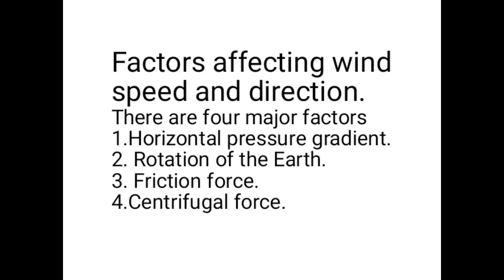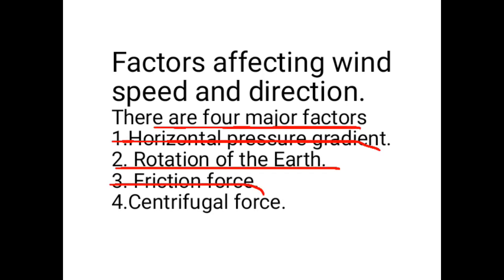Now let us start the factors affecting wind speed and direction. There are many factors, but there are four major ones: the first is horizontal pressure gradient; the second is the rotation of the Earth; the third is friction force — the friction between the air and the surface features of the Earth; and the fourth is centrifugal force.